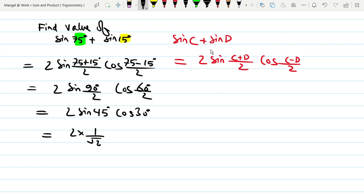The value is 2 times 1 by root 2, cos 30 is root 3 divided by 2. The 2's cancel, giving root 3 divided by root 2, which equals root 3 by root 2.